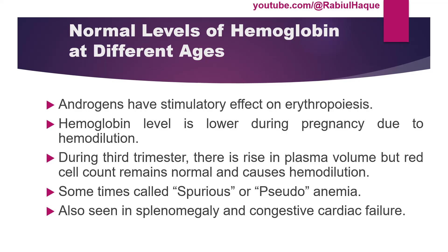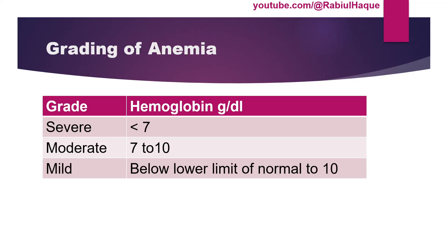Now let's talk briefly about grading of anemia. When blood hemoglobin level is less than 7 g/dL, that is considered severe anemia. When it is between 7 and 10 g/dL, that is moderate anemia. And when blood hemoglobin level is from the lower limit of normal to 10 g/dL, that is considered mild anemia.